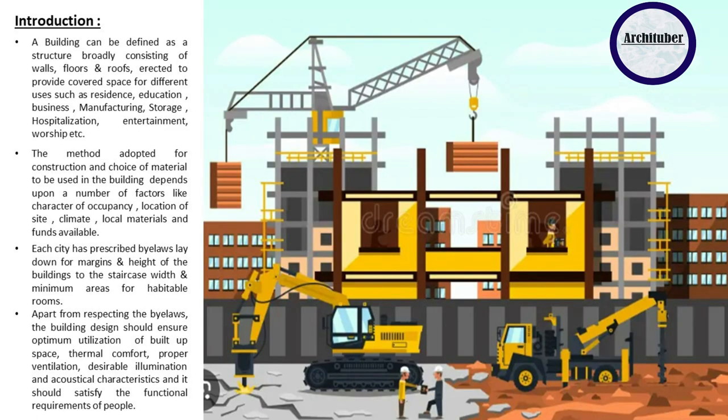When we are constructing anything, the components which we combine together make a building complete. The components consist of floors, walls, roofs, columns, beams, and structural elements. It is different for different typologies — a residential unit will be different, education will be different, then business buildings will have different construction techniques and construction materials. Then manufacturing, storage, entertainment, hospitalization, worship, etc.